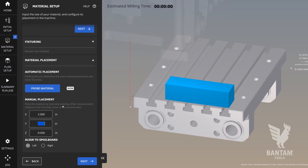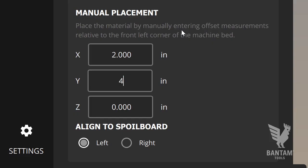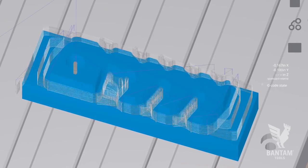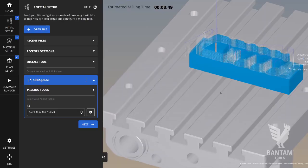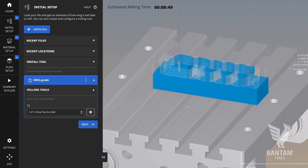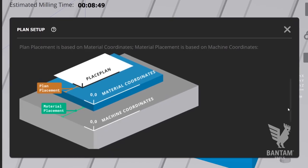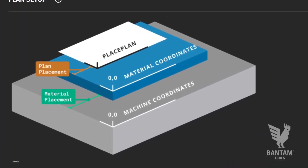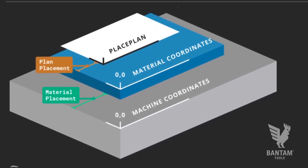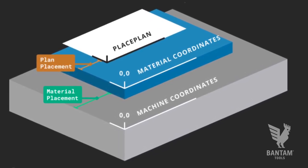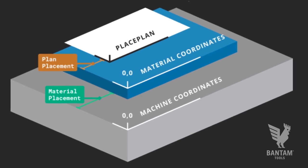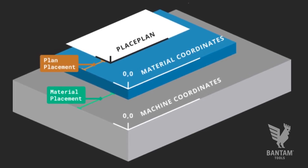In the Bantam Tools software, users set both the position of the stock in the machine as well as the position of the file in the machine. This is done in order to create an accurate preview of the job. The machine bed origin is the top left corner of the bed, the material is relative to this machine bed origin, and the plan position is relative to the top left corner of the material.